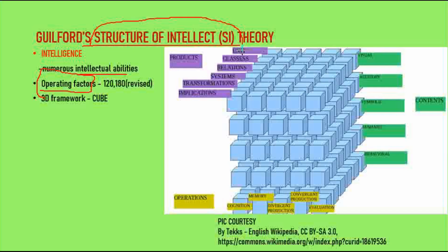He first proposed a model with 120 operating factors, and later proposed 180 factors of intelligence.